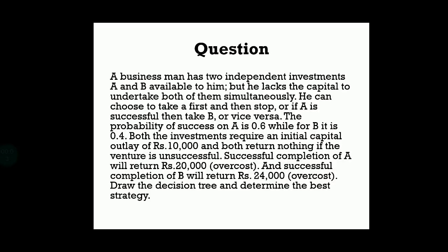A businessman has two independent investments, A and B, available to him, but he lacks the capital to undertake both of them simultaneously. He can choose to take A first and then stop, or if A is successful, then take B, or vice versa. The probability of success on A is 0.6 while for B it is 0.4. Both investments require an initial capital outlay of rupees 10,000 and both return nothing if the venture is unsuccessful. Successful completion of A will return rupees 20,000 and successful completion of B will return 24,000. Draw the decision tree and determine the best strategy.